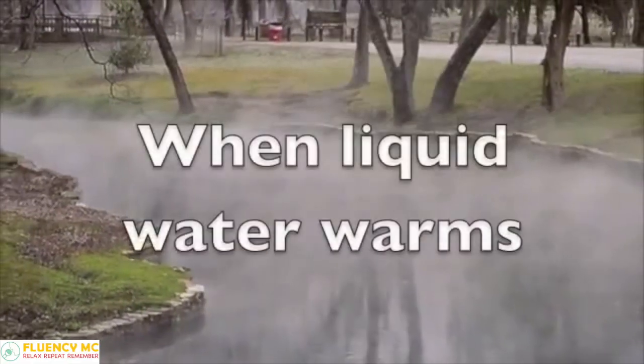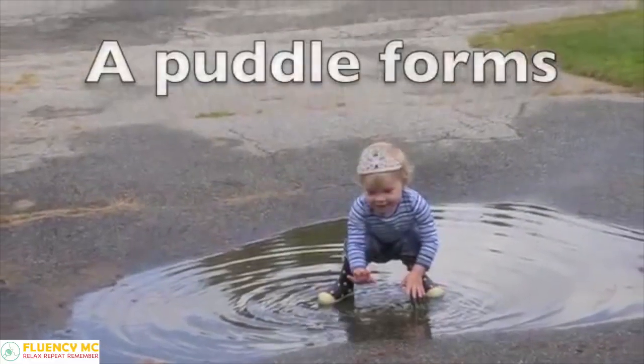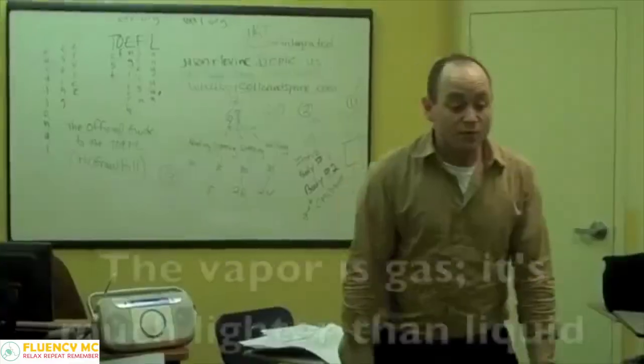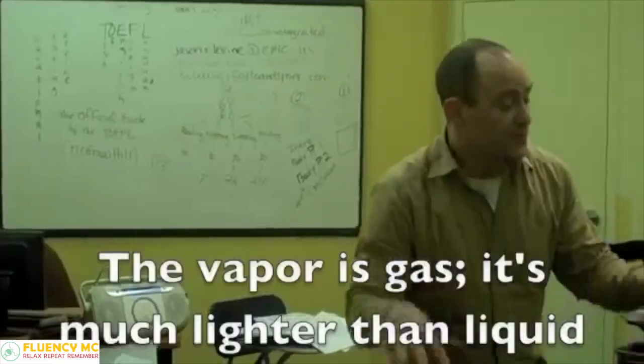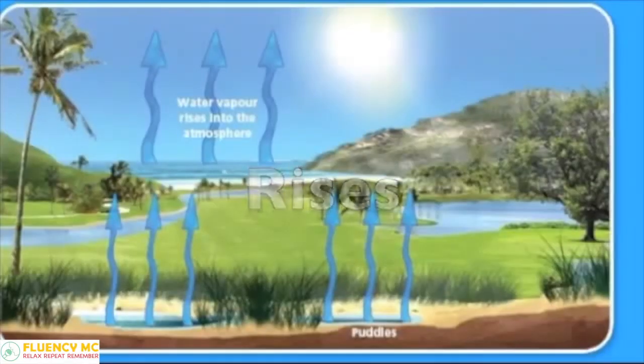When liquid water warms, it changes to vapor, like when a puddle forms and then the ground's dry. The vapor is gas - it's much lighter than liquid. It diffuses and rises up to the sky.